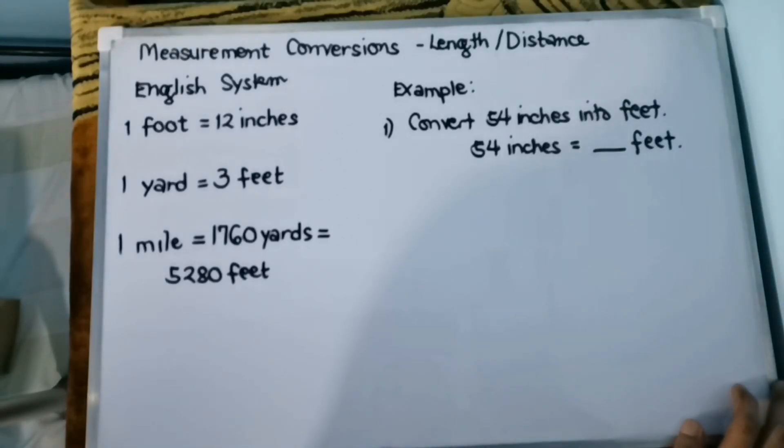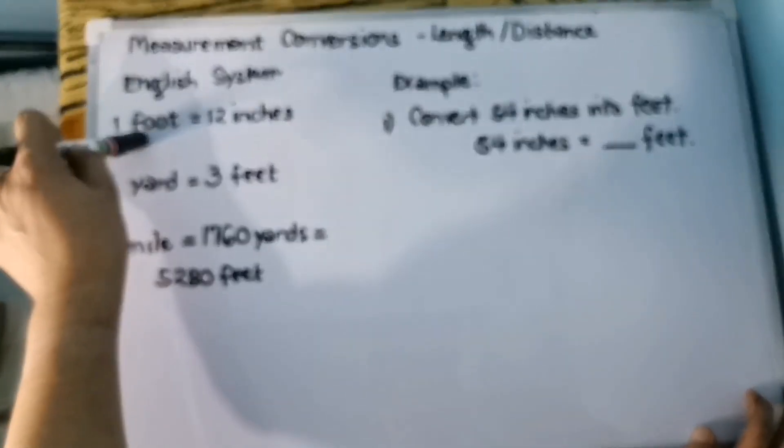So our solution for that, we need to identify the conversion factor to be used, which you will write as a fraction equal to 1. Since we are converting inches to feet, we will use 1 foot is equivalent to 12 inches.